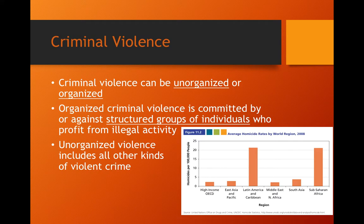We can also talk about criminal violence — violence that could be either unorganized or organized. Organized crime is carried out by structured groups of individuals who profit from illegal activity, such as drug cartels. Unorganized violence refers to all other kinds of violent crime, including crimes of passion and small-scale street crime.